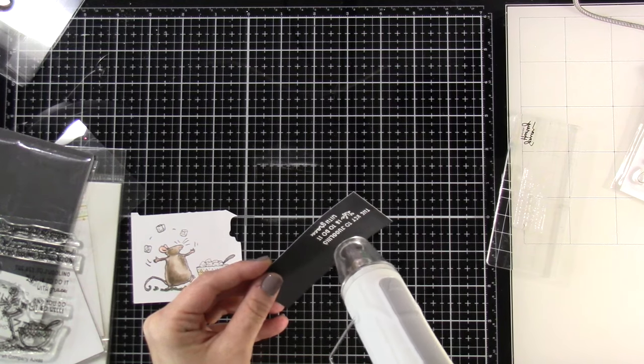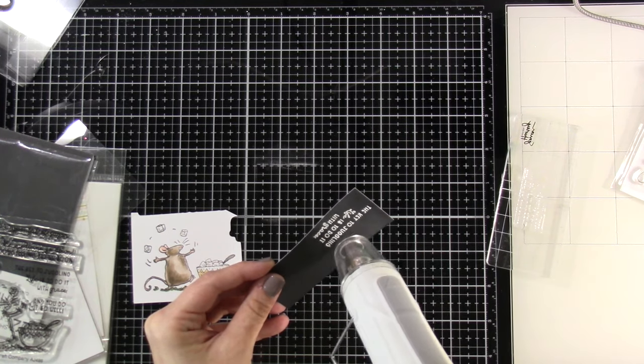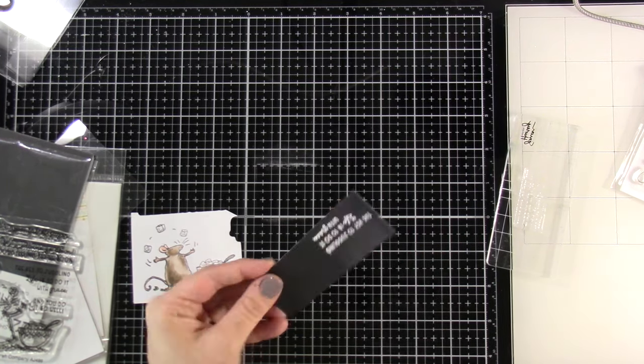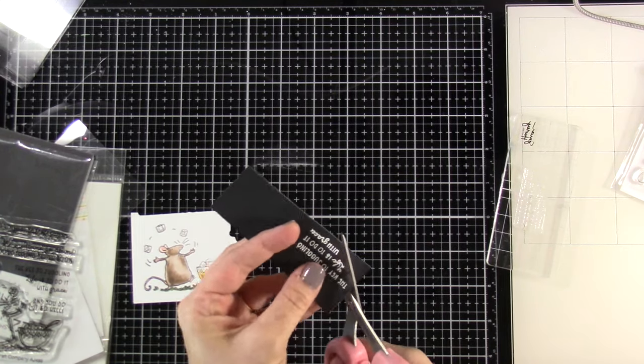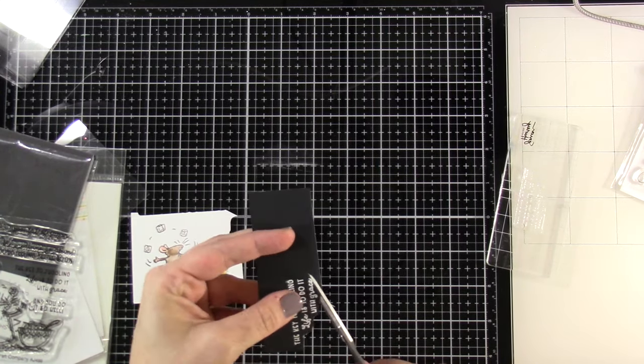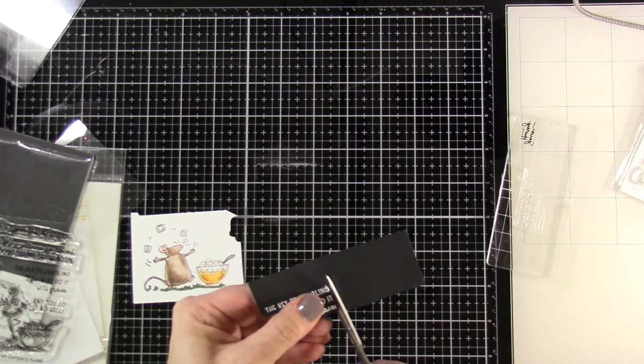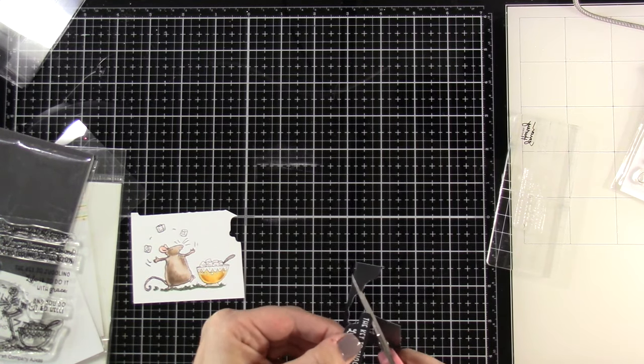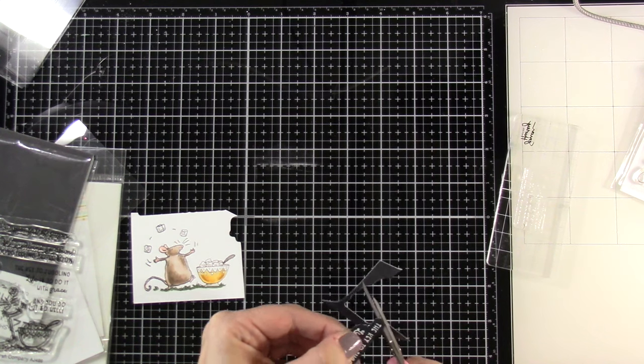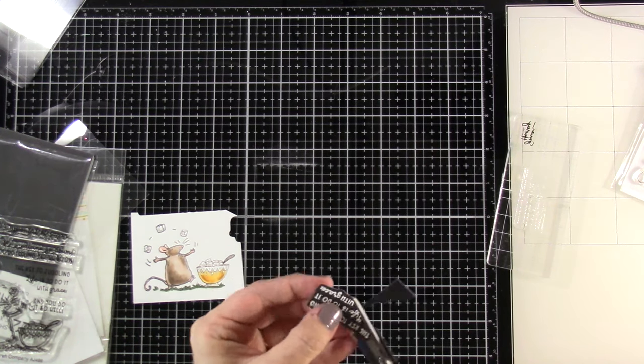There isn't a die for this sentiment so I'm just going to fussy cut around the sentiment. Typically I probably would just cut around it with my guillotine trimmer, but I really wanted it to be close to the sentiment, so I'm using scissors and trimming around those, moving the piece rather than the scissors so much. That just helps to get a better cut.